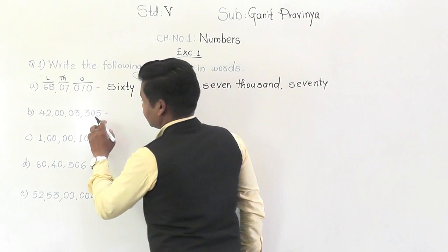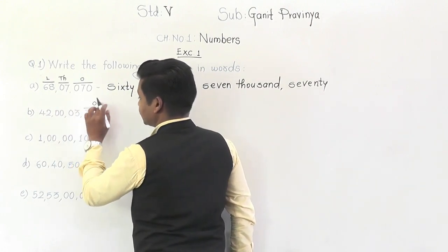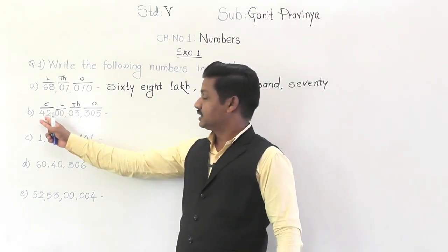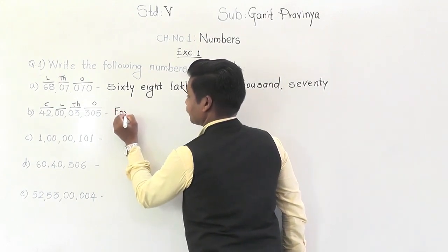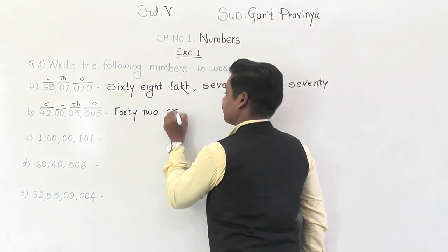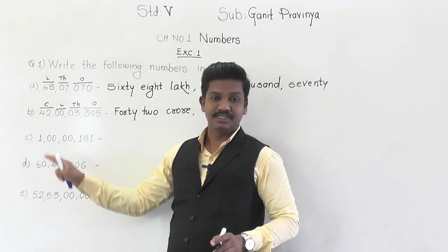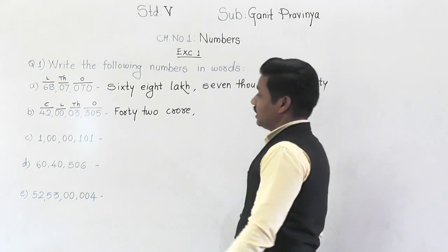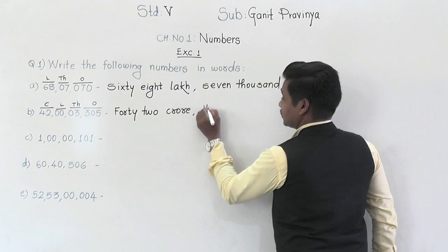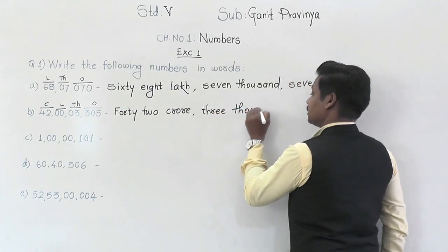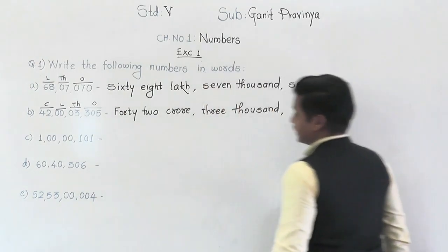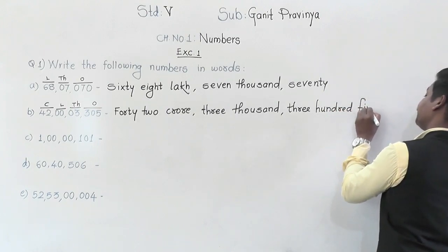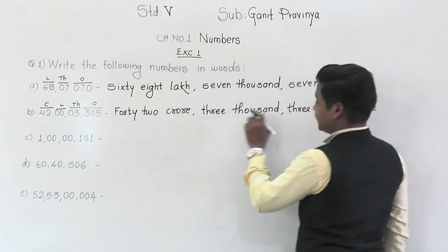Let's move to the next example. Commas are already put, so just write the name of the groups: ones group, thousands group, lakh group, and crore group. In the crore group there is 42 — so 42 crore. In the lakh group there is 00, meaning 0 lakhs — so we don't need to write that; directly move to the thousands group, which has 03 meaning 3000. And in the ones group, 305. So the number name is 42 crore 3 thousand 305.